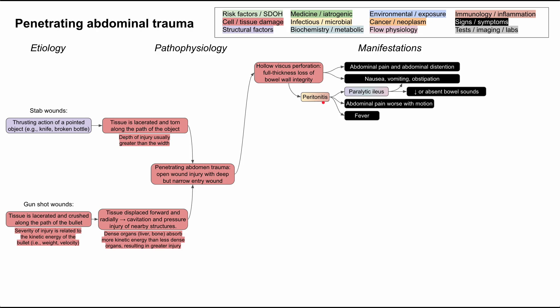Over time, peritonitis can cause fever and infection in the abdomen as bowel contents spill into the otherwise sterile peritoneum. There is also significant third spacing — with severe inflammation, you lose a lot of fluid volume into your peritoneal space. This can be one source of hypovolemic shock from third spacing following peritonitis. The hollow viscous perforation can also contribute to shock if there is significant bleeding.